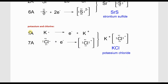One more example: potassium and chlorine. Potassium is in group 1A and loses one electron to form a K⁺ cation. Chlorine is in group 7A and needs one electron to fill the valence shell and become isoelectronic with argon. The number of electrons lost by the metal equals the number gained by the nonmetal, so they combine in a 1:1 ratio — KCl, potassium chloride.